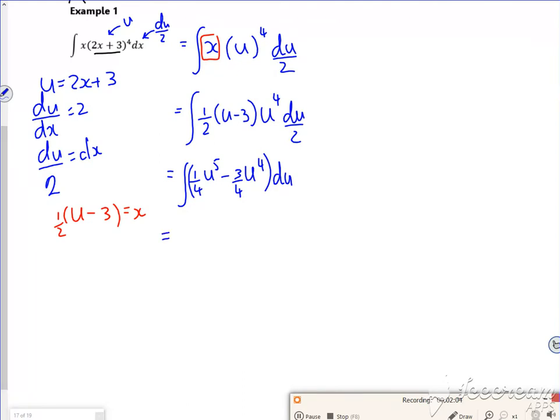If I integrate it, I get u to the 6 over 6, which will tidy up as 1 over 24 u to the 6. Then I've got minus 3 quarters times by u to the 5 over 5, with a plus c on the end, which tidies up as minus 3 over 20 u to the 5 plus c.